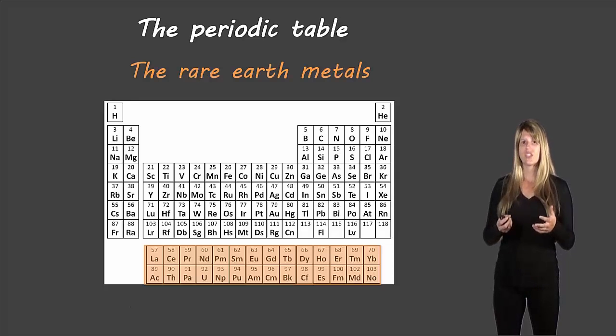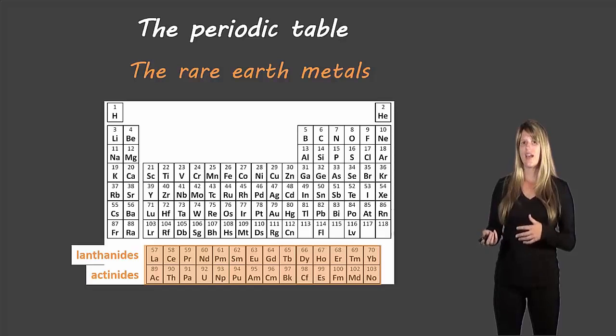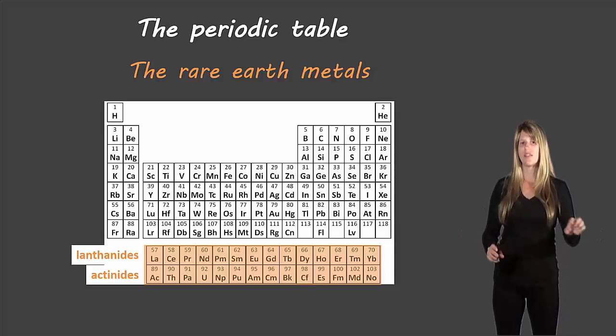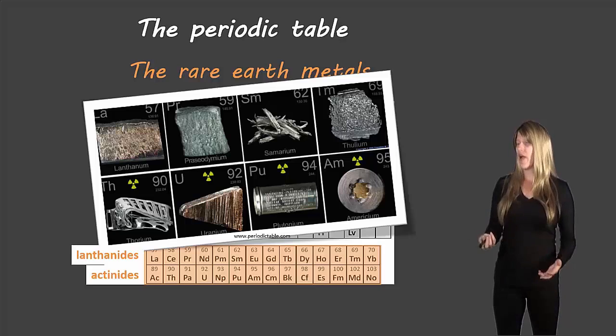The next section of elements that we have are the rare earth metals. These are the lanthanides and actinides. That first row out of the group at the bottom are the lanthanides, and the ones below are the actinides. These are all metals, so they have characteristics of metals, and they're really important on a lot of the electronics that we use.